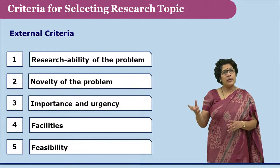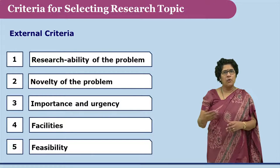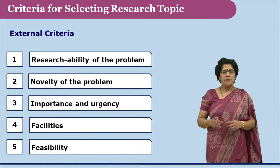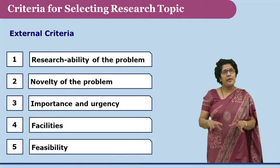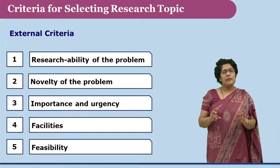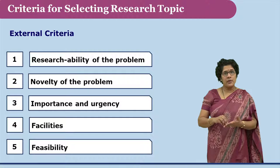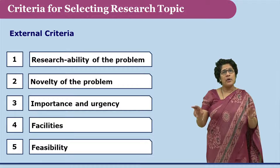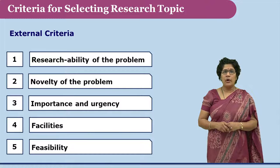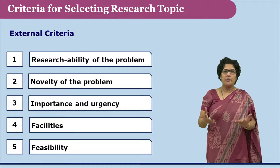We shall now discuss the external criteria. The first external factor is the researchability of a problem — whether the problem is really researchable. There will be a lot of energy going into the research, and it will make sense only if that energy is spent in an area which is researchable. Otherwise, one should not take up research which does not have enough researchable aspects.